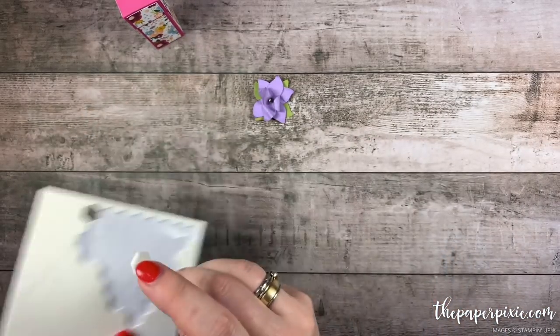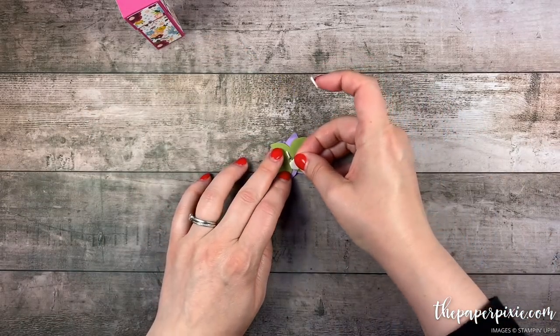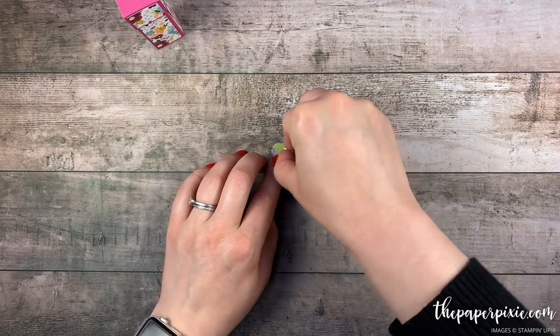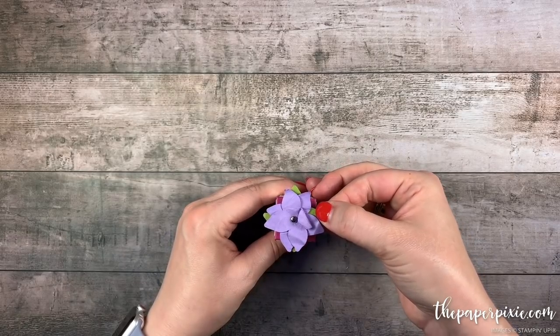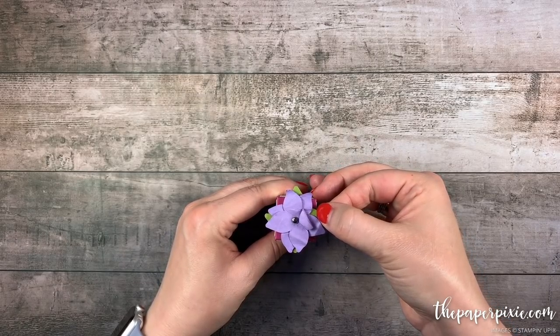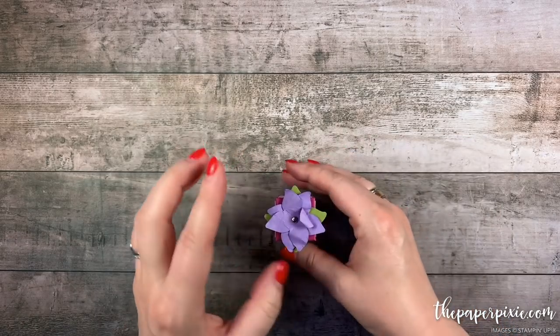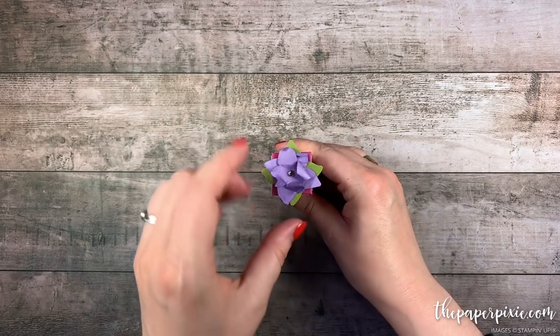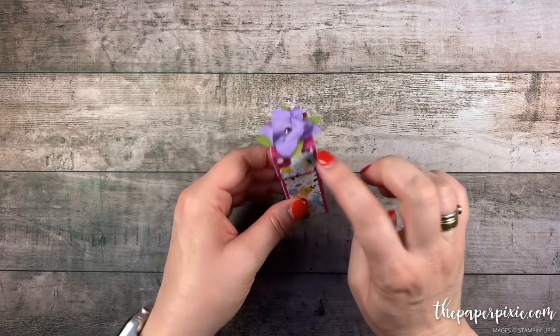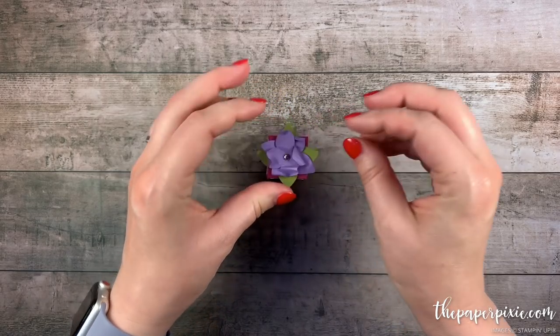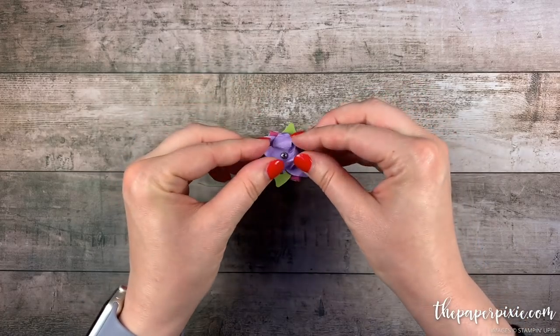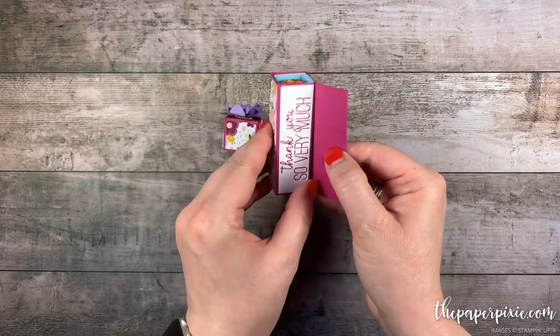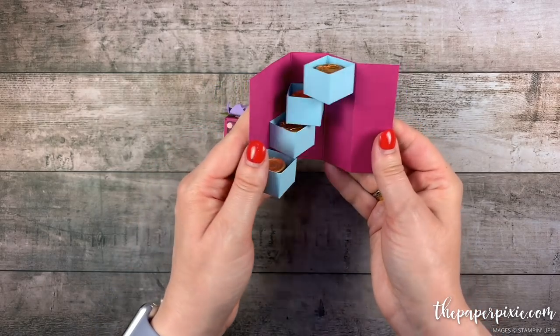I'm going to pick up two dimensionals, stick that on the back side of the flower kind of covering up the brad tails there. Then we can pop this on the lid of our box. Now if you didn't want to do the flower and you wanted to do the designer series paper instead you would just do a 15/16 by 15/16 piece of designer series paper. I opted not to put that because the flower really covers up this piece but I love how that turned out. How fun is this Rolo stepper box? Love it!